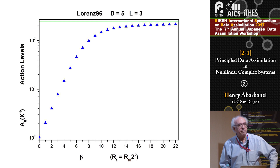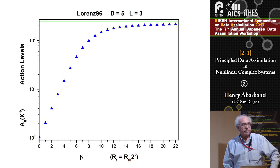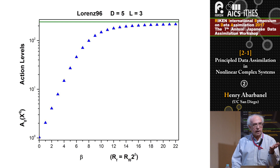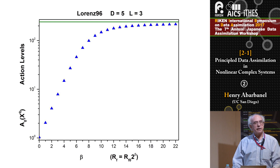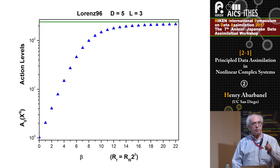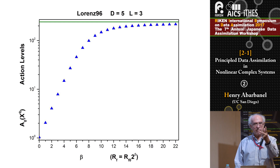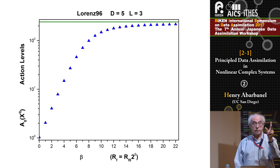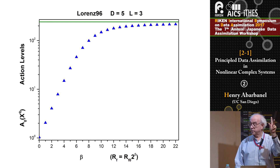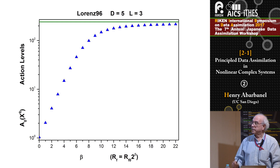Why is it that when you have enough measurements there's a single path? The underlying dynamical system — which is a chaotic toy model — is unstable in its own state space. However, by making enough measurements — in this case three — you've probed the unstable space. You have an idea of how things vary along each of the unstable directions, and you've been able to control them through the minimization of the action to give a stable result.